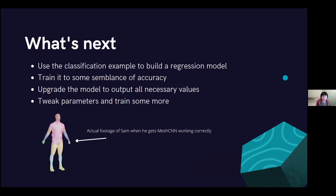In terms of next steps, we'll be continuing our efforts to build a regression model from the classification example available on MeshCNN. Once everything's running, we'll train it to show some semblance of accuracy. We'll also be looking to upgrade the model to output all necessary values — drag, lift, and center of pressure — producing all three outputs rather than just one. Finally, we'll tweak the hyperparameters and maybe run some sweeps to see if we can improve the model, though that's pretty far ahead. And that's about it from us.